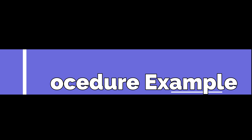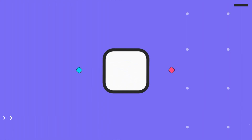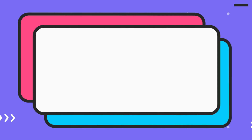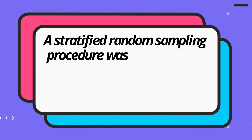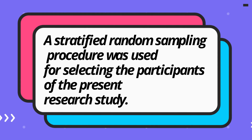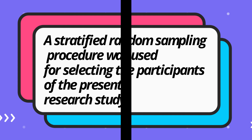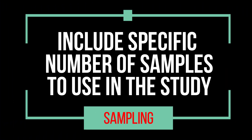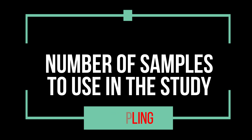In this part of Chapter 3, you should clearly explain how you selected your samples or research participants. Start with an initial statement, then explain what stratified random sampling is and discuss its process and how you employed it in collecting the data you need. Do not also forget to include the specific number of samples or research respondents the study will use.